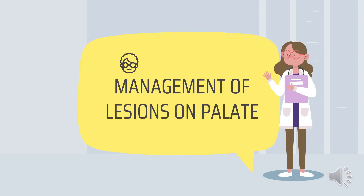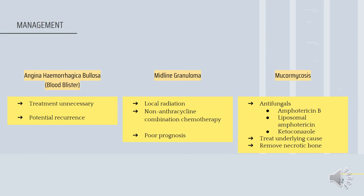Now we look at the management of lesions on the palate. For angina hemorrhagica bullosa, treatment is unnecessary as the blister will spontaneously rupture soon after development, and healing takes place without scar formation. However, some patients may experience repeated recurrences. For midline granuloma, the treatment of choice is local radiation. In advanced cases, non-anthracycline combination chemotherapy may be helpful, although the prognosis remains poor.